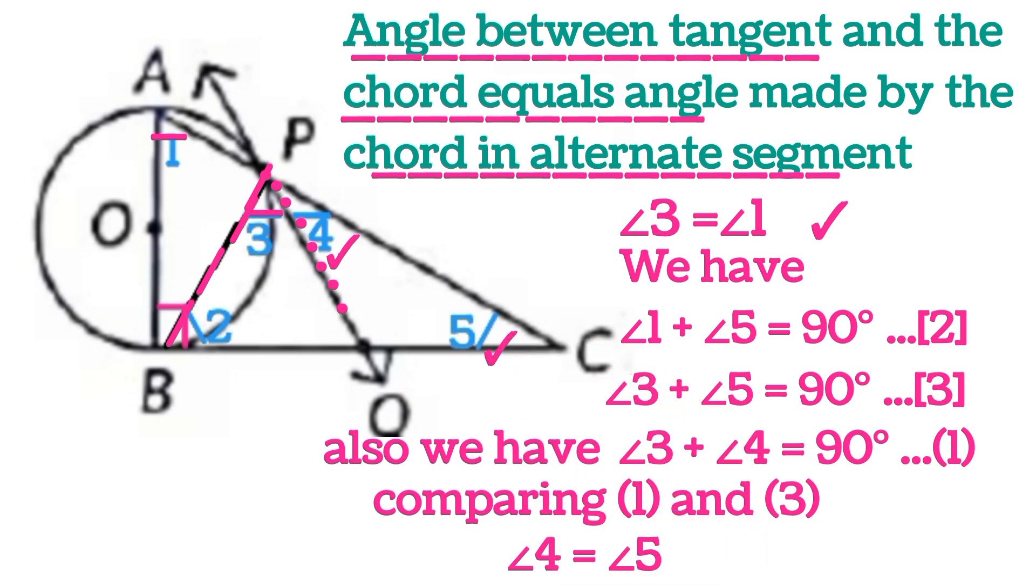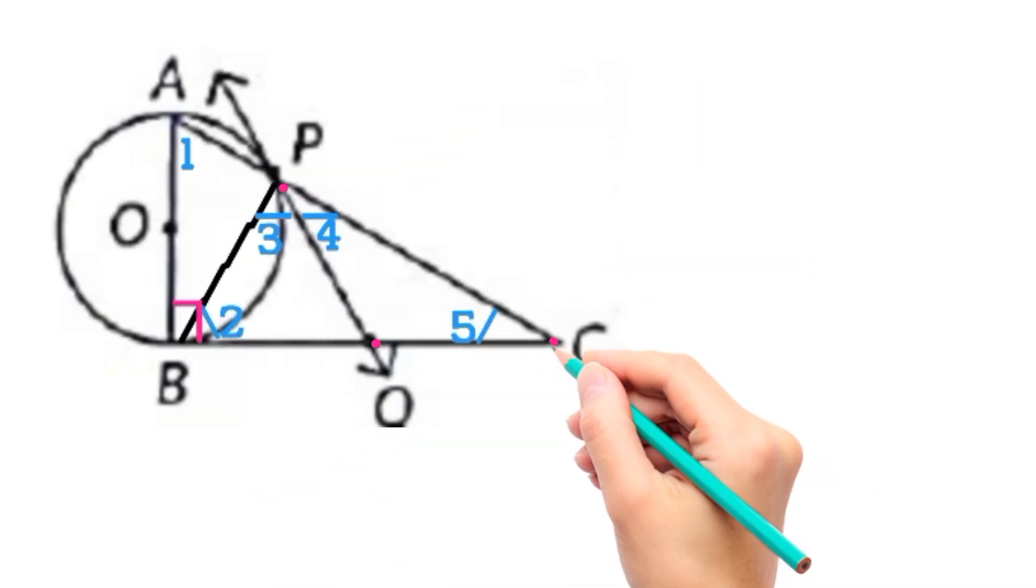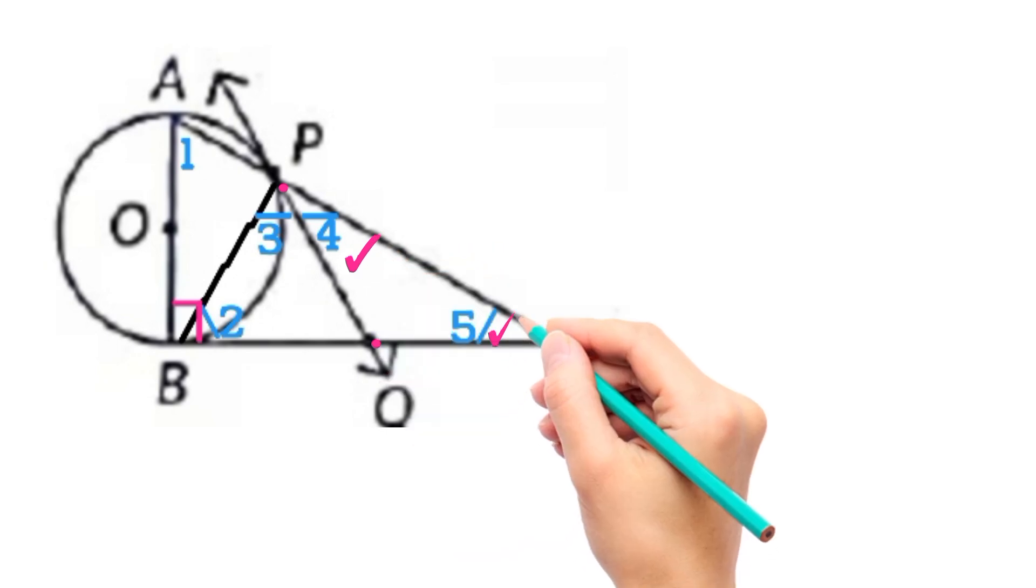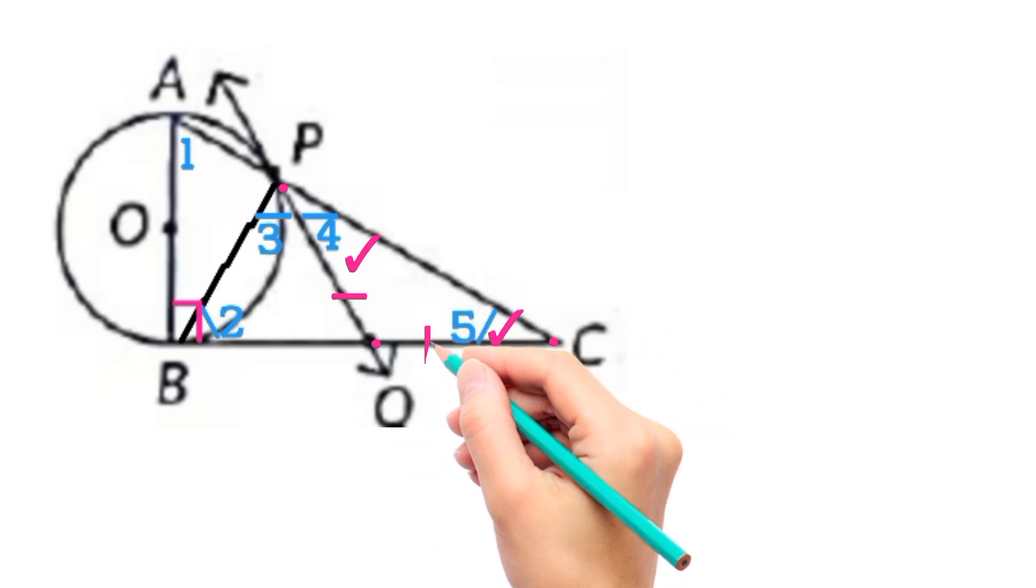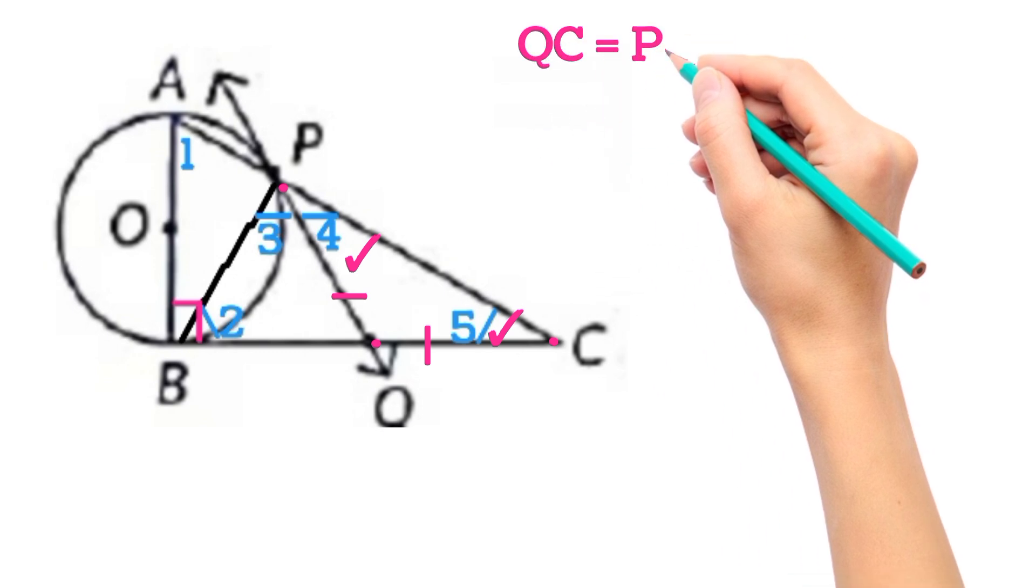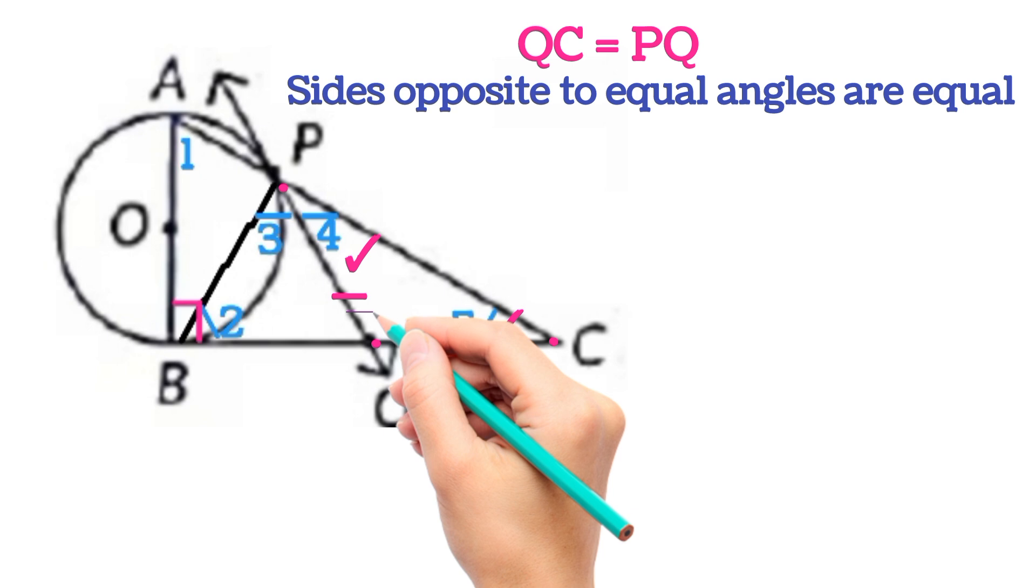Let us draw the figure again. In triangle PQC, this angle is equal to this, so this side will be equal to this side. That is QC is equal to PQ, that is sides opposite to equal angles are equal.